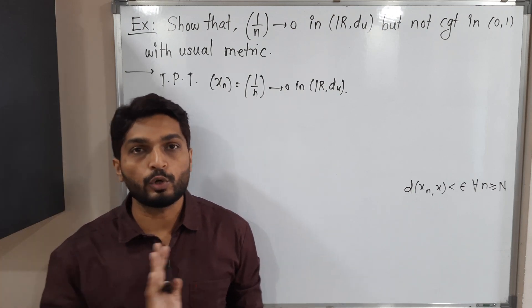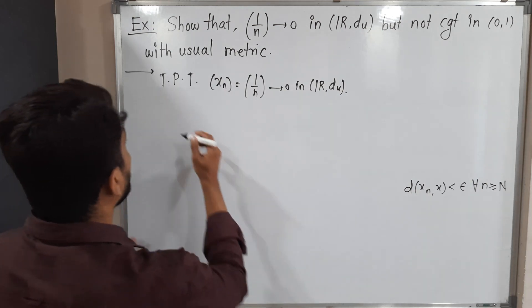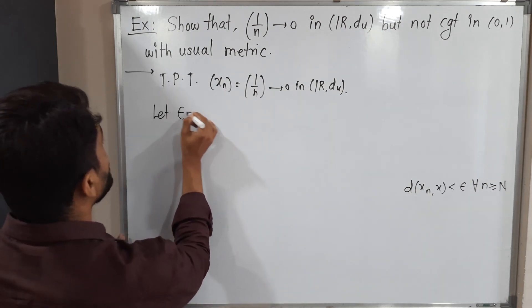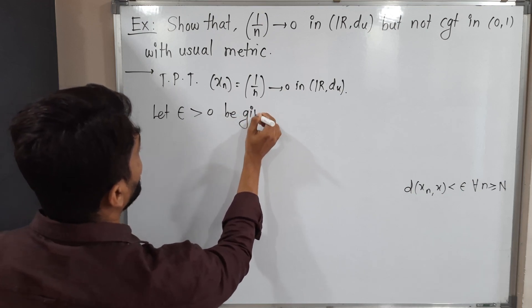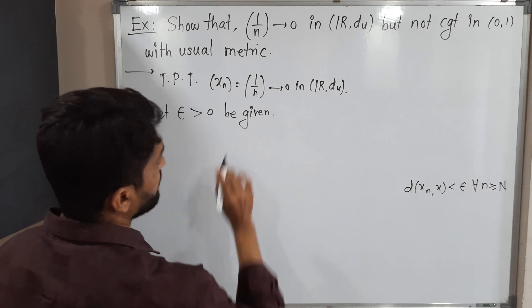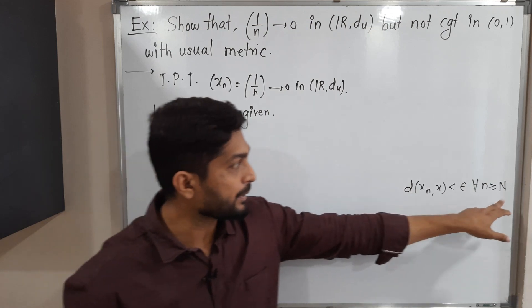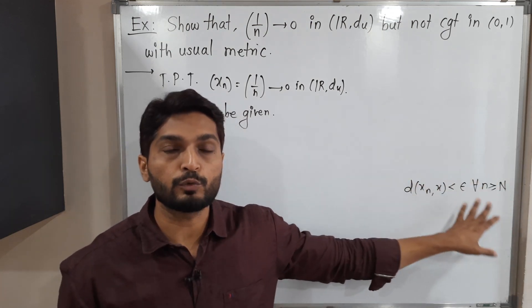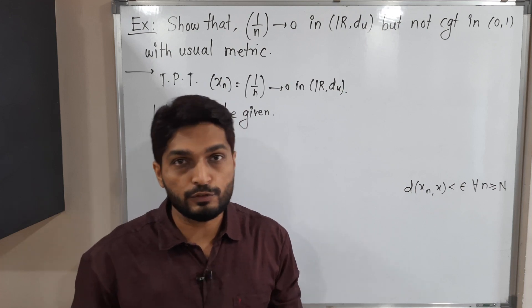The same definition I am going to use to solve this problem. So let us take one epsilon first. Let epsilon greater than 0 be given, any arbitrary positive epsilon I have taken. For this epsilon we have to find capital N for which this definition will be satisfied. So for that we need to do some calculations first.